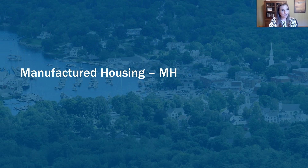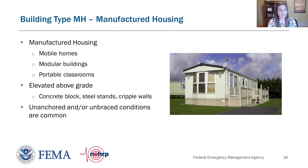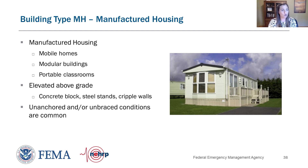The final building type is manufactured housing, MH — added in the third edition of FEMA P154. Manufactured housing or mobile homes are often used as housing or portable classrooms. These buildings are built in a factory and transported to the site, where they sit on concrete block, steel stands, or cripple walls, elevated above grade by a couple of feet. A photograph shows manufactured housing with steps up to the front door, indicating it is elevated off the ground.